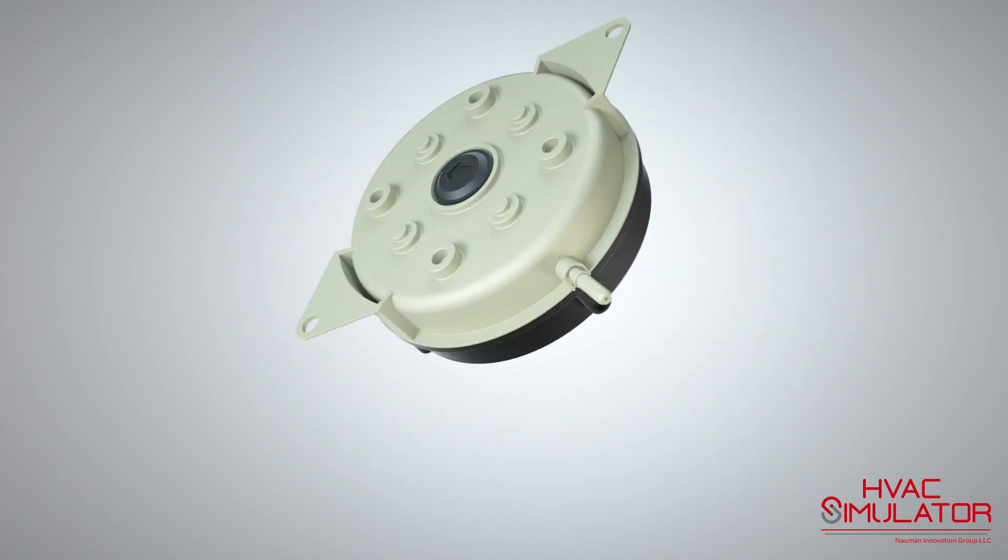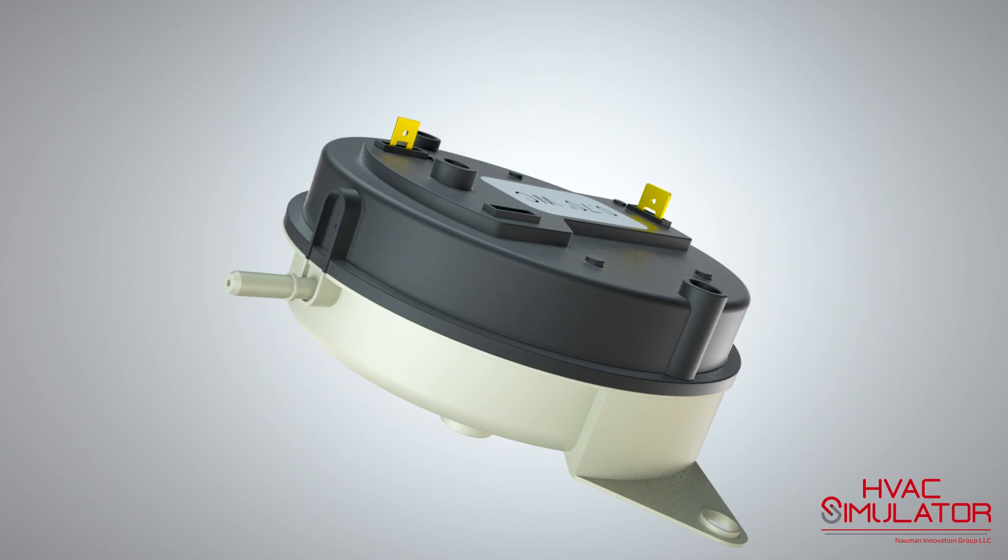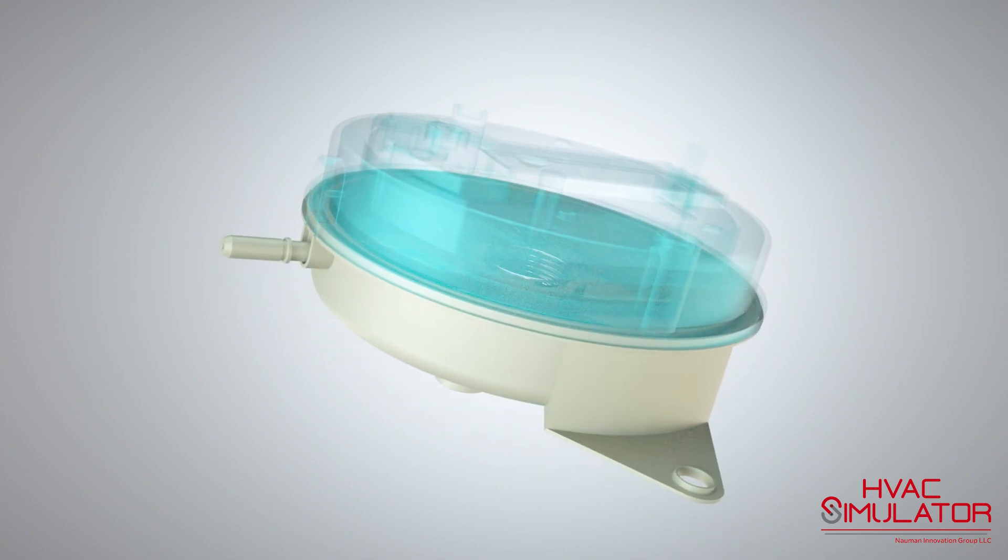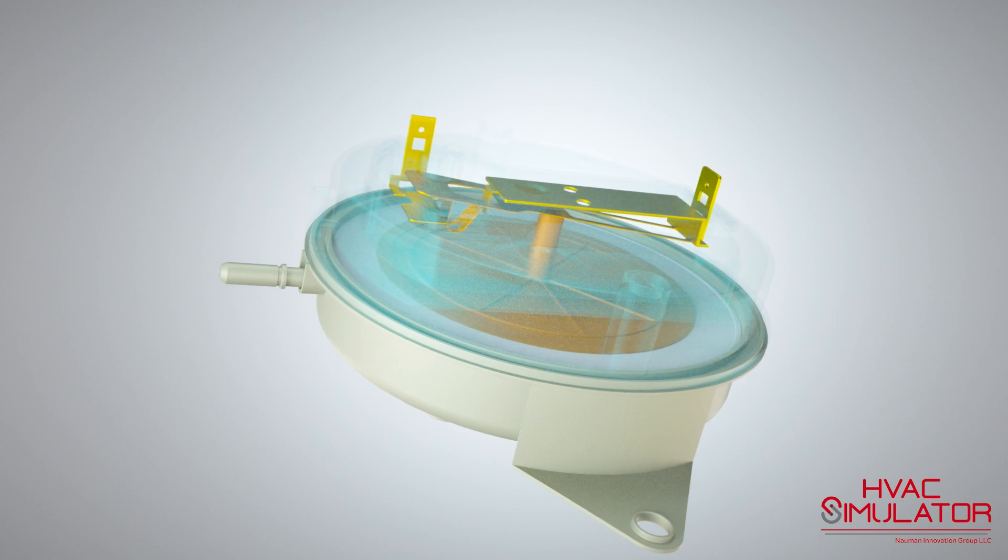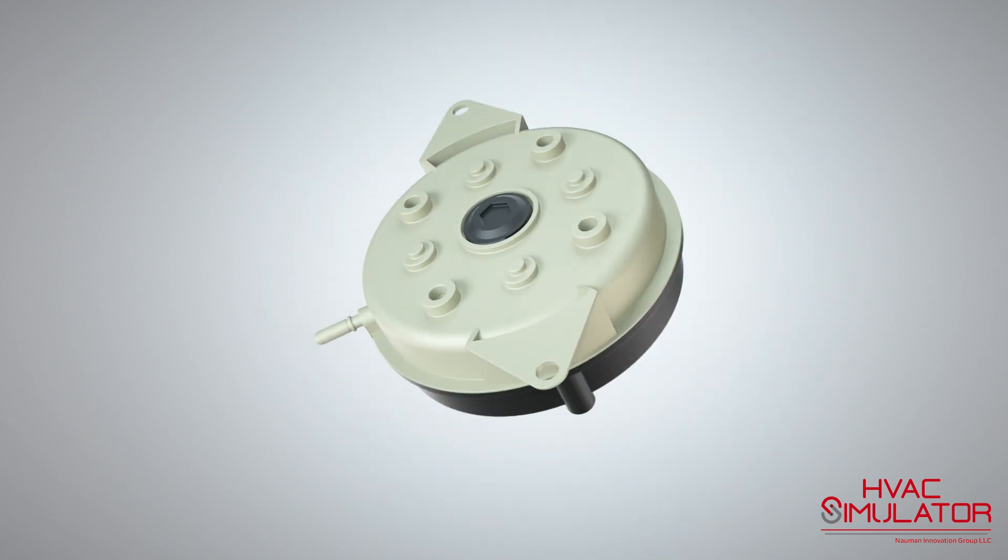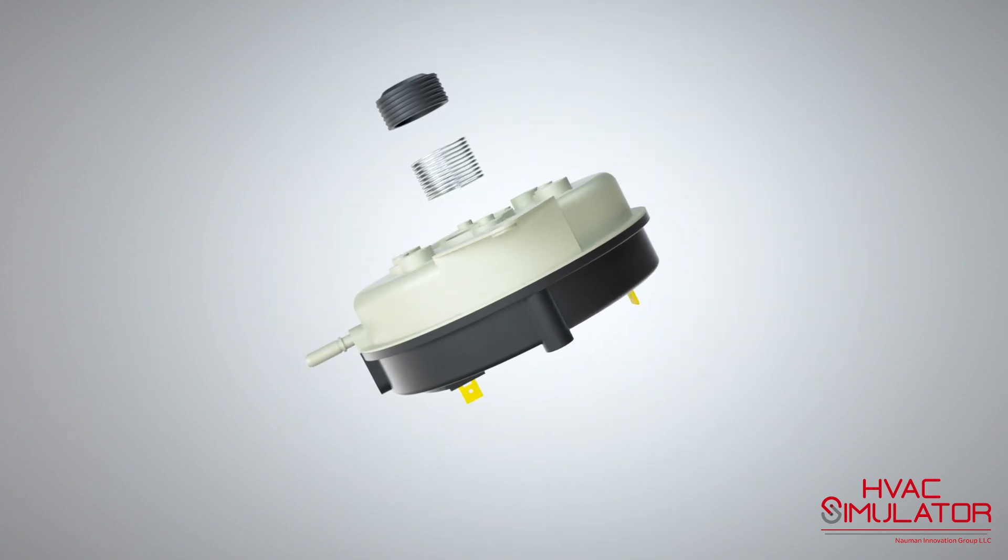The components that make up a pressure switch are the spring, the shell, the diaphragm, and the contacts. The spring pressure on the diaphragm determines the pressure switch value.